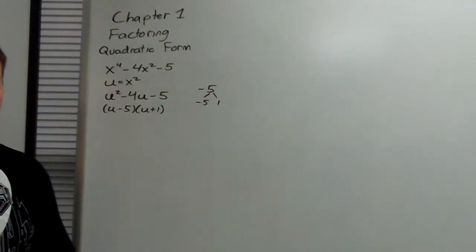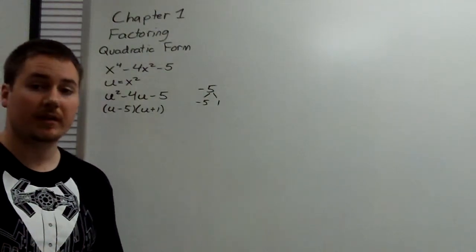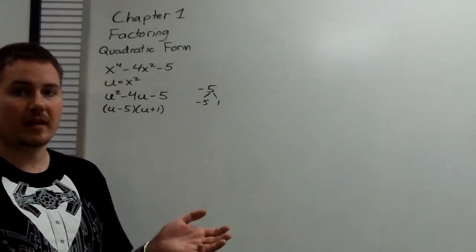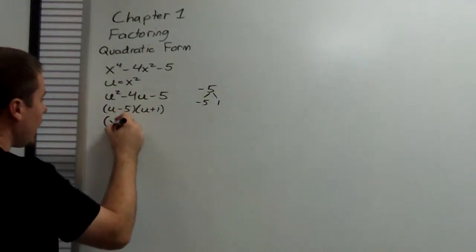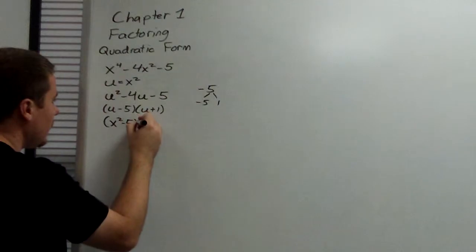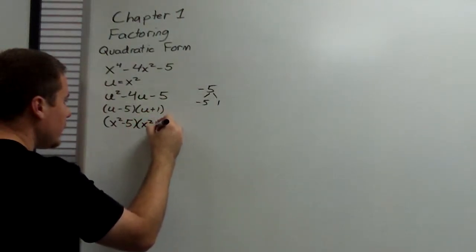Now, we can't leave the answer like this because the question never asked us to express it in u's. So, we need to convert it back into x squareds. When we do that, we get x squared minus 5 and x squared plus 1.